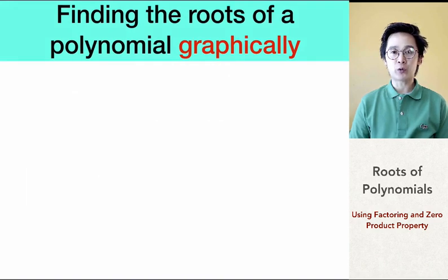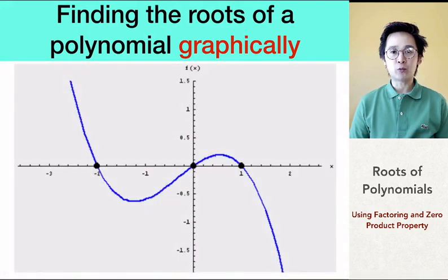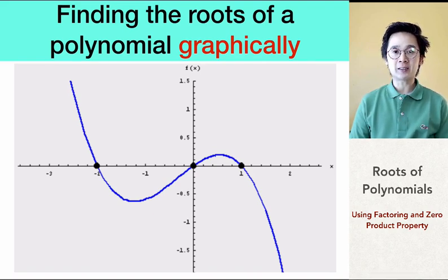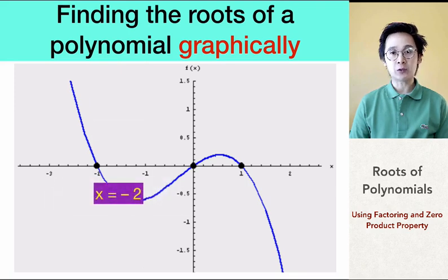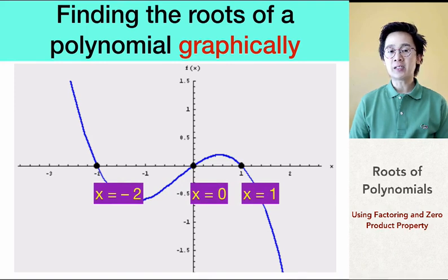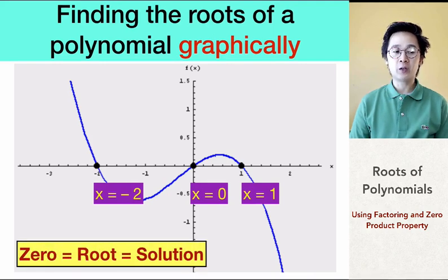The first method we're going to use is finding the roots using a graph. In this particular example, we are looking at the graph of a certain polynomial. You will notice that the graph is intersecting the x-axis three times, at x equal to negative two, x is equal to zero, and x is equal to one.